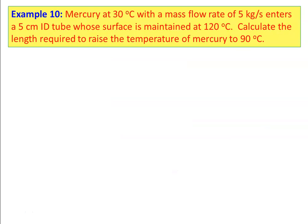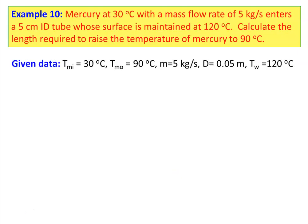Example number 10: Mercury at 30°C with a mass flow rate of 5 kg/s enters a 5 cm internal diameter tube whose surface is maintained at 120°C. Calculate the tube length required to raise the temperature of Mercury to 90°C. Given: inlet temperature 30°C, outlet temperature 90°C, mass flow rate 5 kg/s, diameter 0.05 m, wall temperature 120°C.